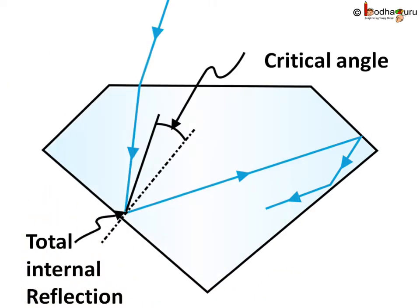Thus light gets internally reflected many times before it emerges out from the diamond. So our eyes receive a lot of light and the diamond looks elegantly shiny. So the shine of a diamond is due to total internal reflection.